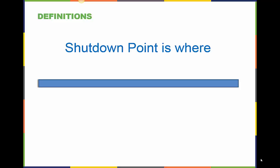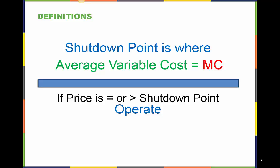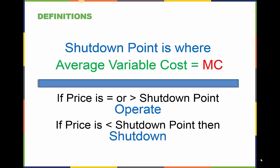Time for some more definitions. A company has to decide whether to operate or shut down its operation depending on if it is experiencing enough of a loss. The shutdown point is determined by the average variable cost and the marginal cost curves of a firm. The point at which they meet is the shutdown point. If the price is equal to or greater than the shutdown point, then the firm will continue to operate. If the price is less than the shutdown point, then the firm will shut down its operations.